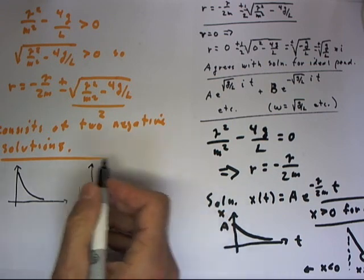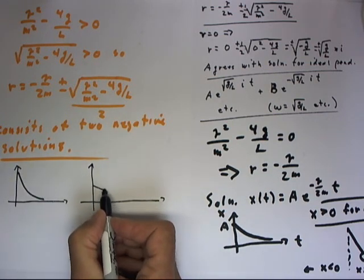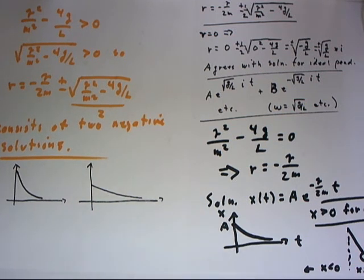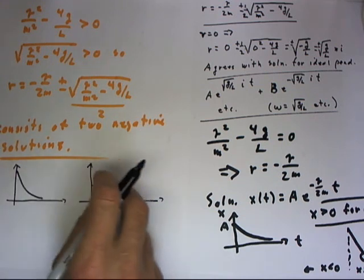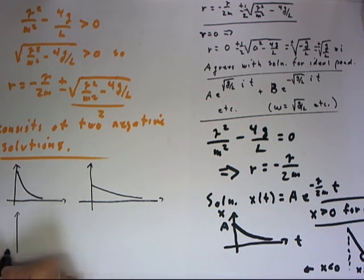So we're going to have two exponential solutions, one of which approaches zero rapidly, one of which will approach zero less rapidly. When we superpose these two solutions, when we add this solution to this solution, we get something that looks a whole lot like a single exponential.